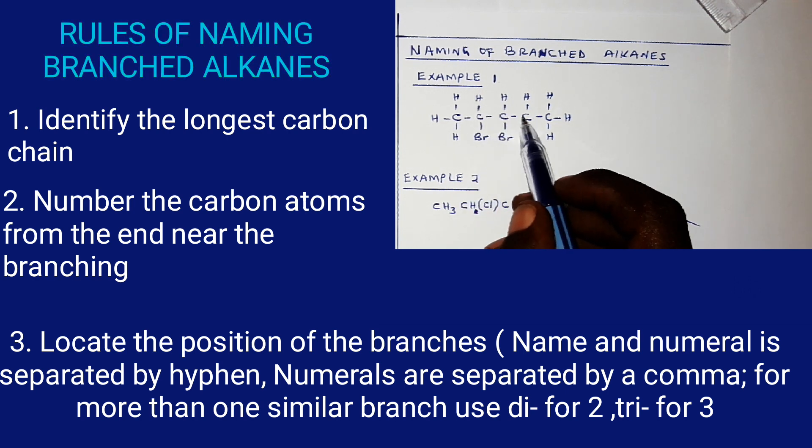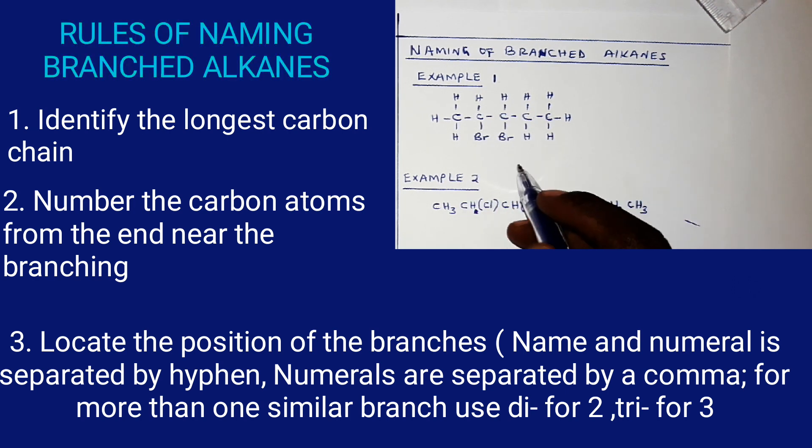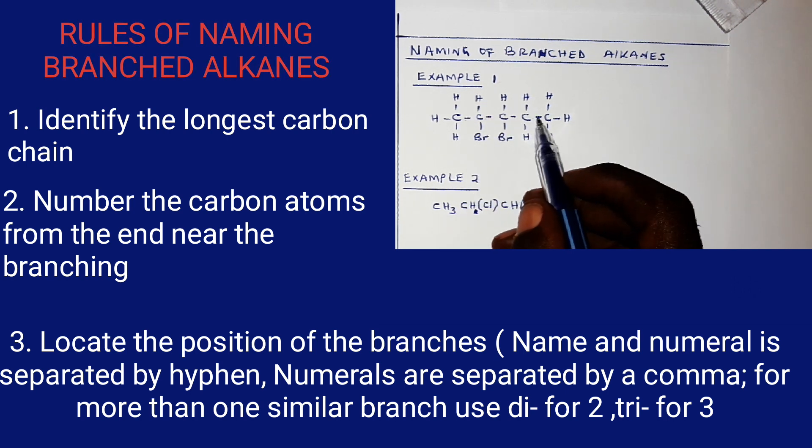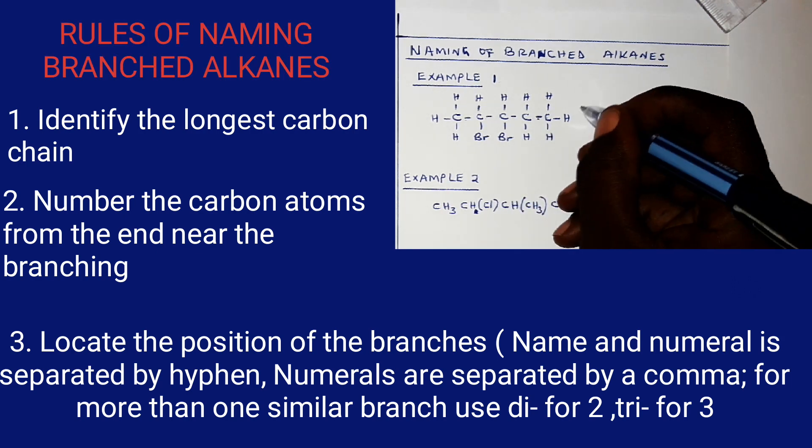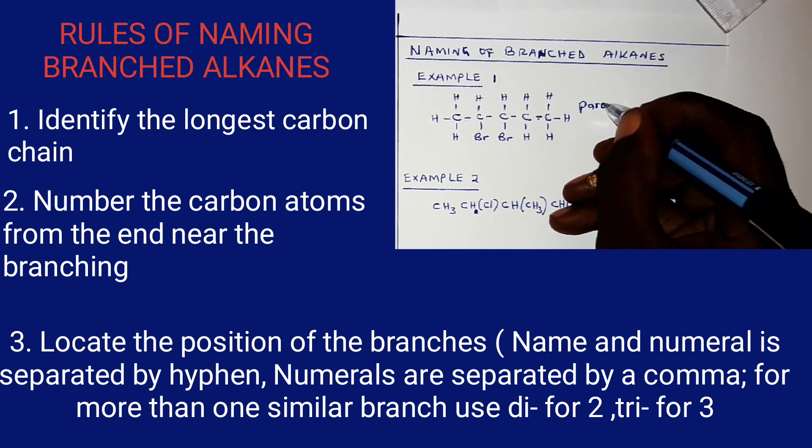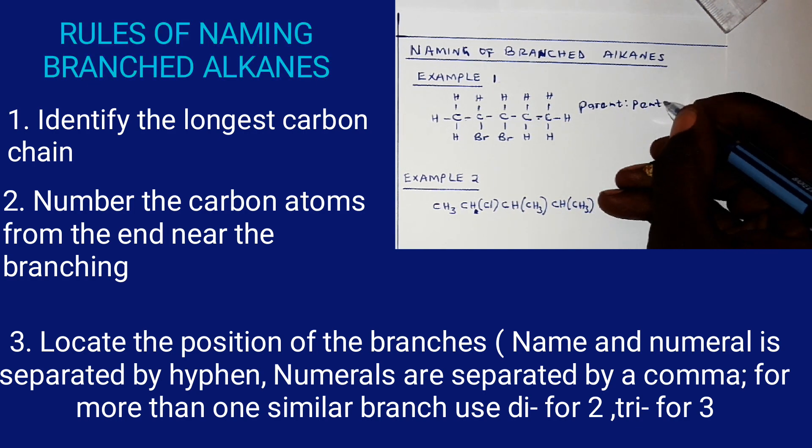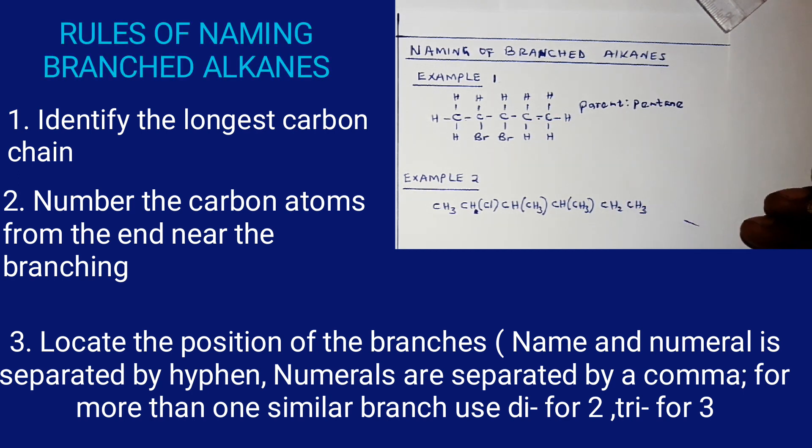One, two, three, four, five. So five carbons, the prefix is pent. Now because we have single bonds, the suffix becomes -ane. So the parent name here becomes pentane.